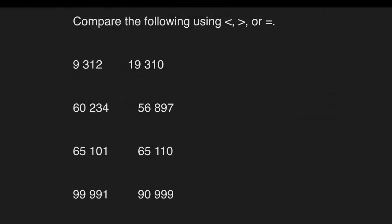Let's have this activity. Compare the following using less than, greater than, or equal to. For the first number, what do you think is the answer? The answer is less than. Why? Because this number, 9,312, has only 4 digit numbers. This one has 5 digits. So this is having more value.